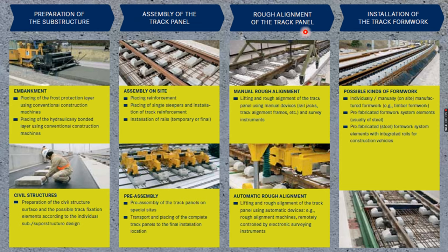Then rough alignment of the track panel is carried out. In any slab track system, track alignment is a crucial part because this is a fix-and-forget type of system. After concreting, we cannot do anything. As the life of this system is up to 60 years, for the next 60 years we cannot even change the alignment. A tolerance of 0.5 mm is achieved in aligning the track, in gauge as well as in alignment.